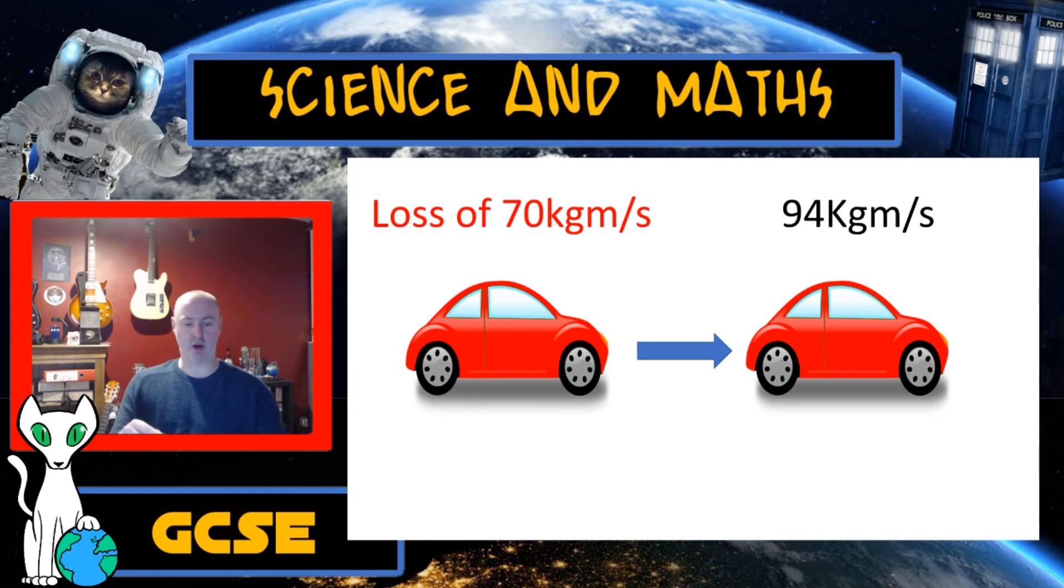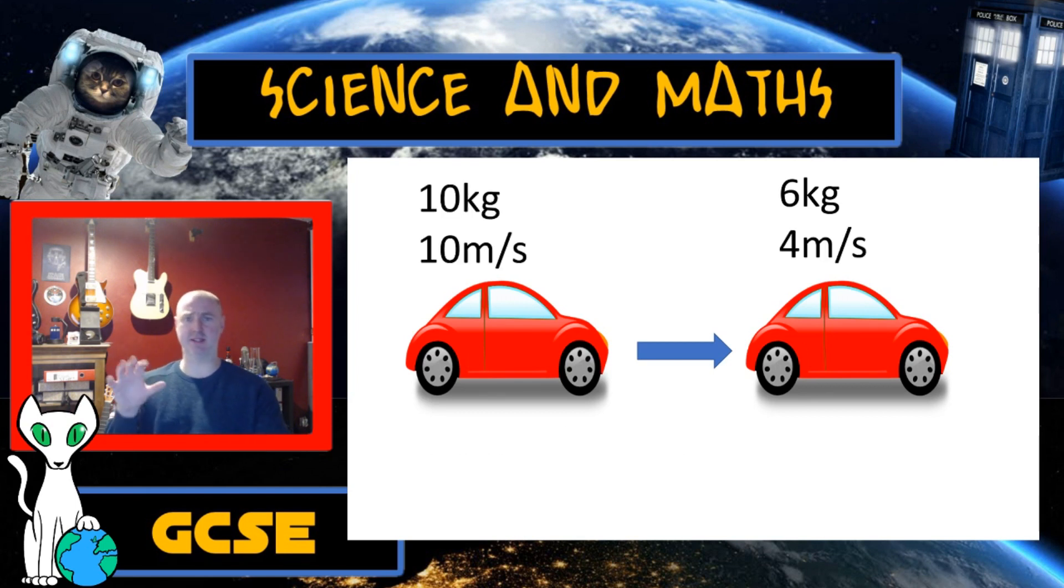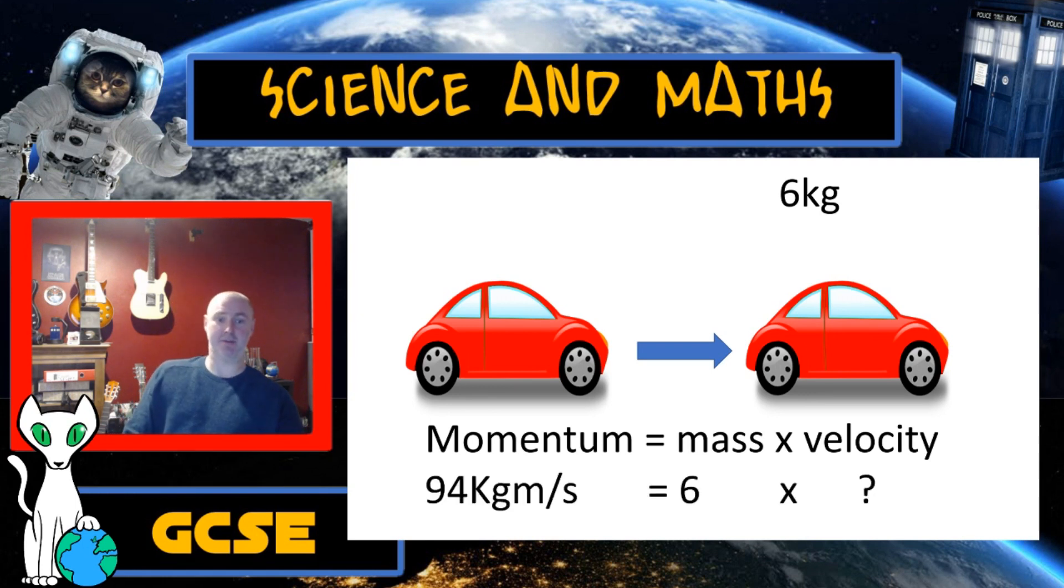So from here it should be straightforward if we know our momentum equation, which is this. If we don't know our momentum equation, please check out the link that's in the description to this video. Going back to the original question, we are told the mass of the car that's being hit and we should know this equation: momentum equals mass times velocity. Because we know the momentum is now going to be 94 kilogram meters per second and we know that the mass of the car is 6, then I can say this: 94 kilogram meters per second equals 6 times whatever that new velocity is.